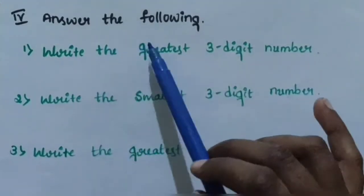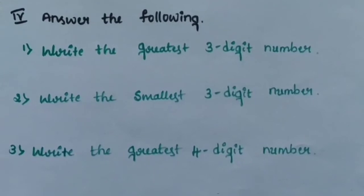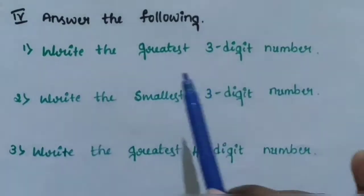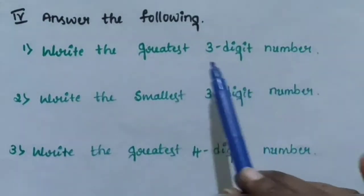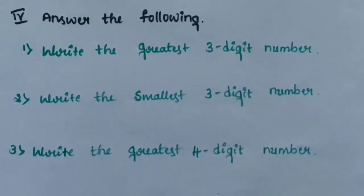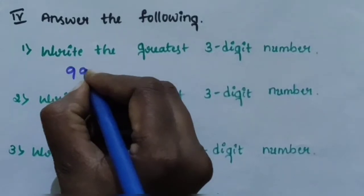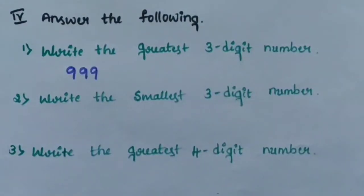Next, fourth main — answer the following. You already know about the greatest and smallest number for 1-digit, 2-digit, 3-digit, and 4-digit numbers. Question number 1: write the greatest 3-digit number. The greatest 3-digit number is 999.